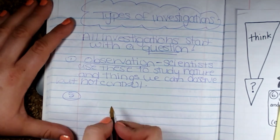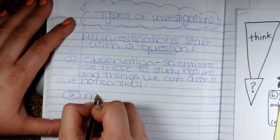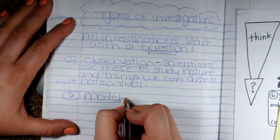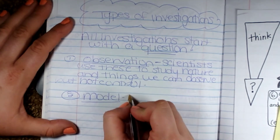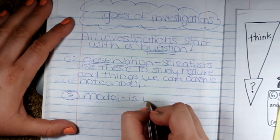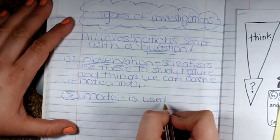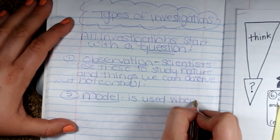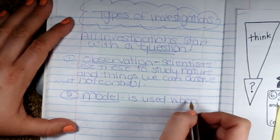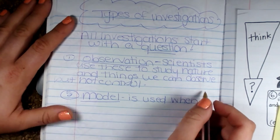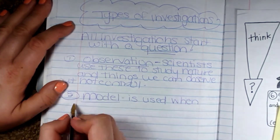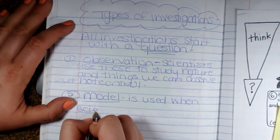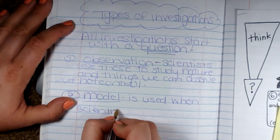The next one is a model. For example, if someone has a question about a bridge, it's very difficult to do an experiment on an actual bridge. So they might make a smaller version of the bridge and do tests on that. That is a model.